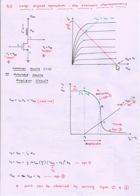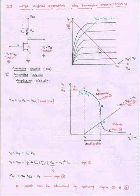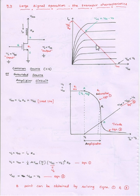The coordinates of the two endpoints of the load line are (VDD, 0) and (0, VDD/RD). The variables of this straight line are VDS and ID, which are also the variables of the MOSFET. Therefore, superimposing the drain characteristics and the DC load line allows us to find their intersection points.